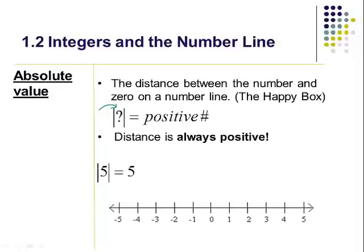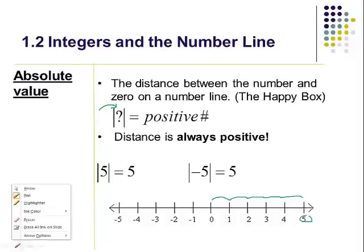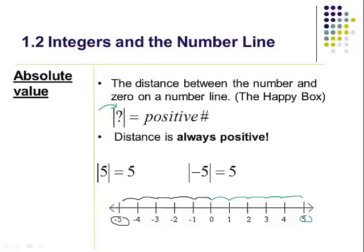So we have our number line to help us. The absolute value of five is positive five. I have five right here and it would take me one, two, three, four, five steps — because remember, it's the distance between the number and zero, so a distance of five. Just like if I had negative five, it's on the left side of the number line but it would still be a positive number — a distance of one, two, three, four, five away from zero.